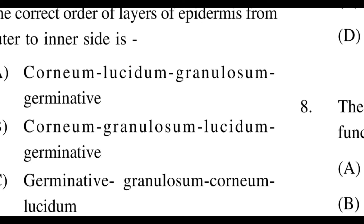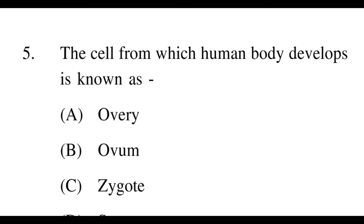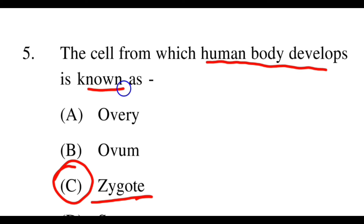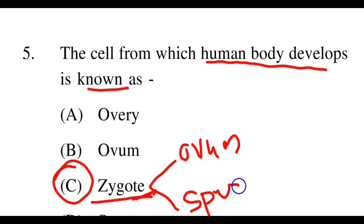Next question: The cell from which the human body develops is known as? Options: A: ovary, B: ovum, C: zygote, D: sperm. The right answer is option 3, zygote. Zygote is the first cell from which human body development begins. Zygote is formed after fertilization of ovum and sperm. When ovum and sperm fertilize, the product is the zygote, and from the zygote the human body starts to develop.